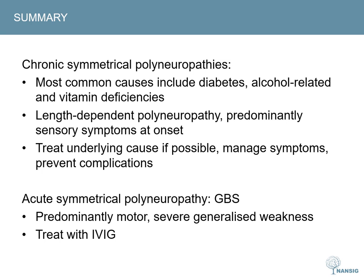To summarise: the chronic symmetrical polyneuropathies — most commonly caused by diabetes, alcohol and vitamin deficiencies — present as a length-dependent polyneuropathy with predominantly sensory symptoms at onset. The principles of management are to treat the underlying cause if possible, manage symptoms and prevent complications. GBS is an acute symmetrical polyneuropathy, predominantly motor, presenting as acute paralysis with severe generalised weakness, and the specific treatment is intravenous immunoglobulin.